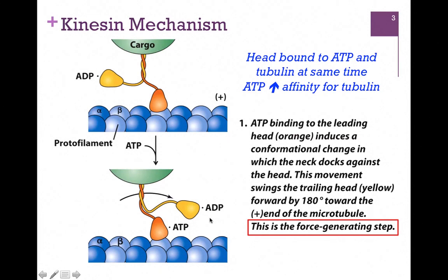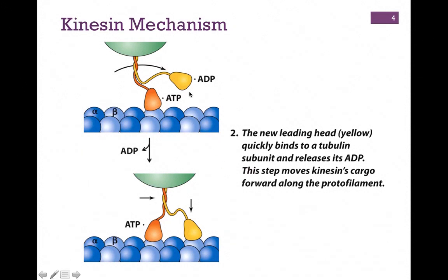Here's another difference: our goal is to move that cargo towards the positive end, and simply by moving my left foot forward, I'm already moving in that direction. So the force-generating step is the first thing instead of the last thing, as we saw in myosin. We now have a new leading head in yellow, currently bound to ADP, and our new trailing head in orange is bound to ATP. As we swing that new leading head forward, it quickly binds the next beta subunit of tubulin and releases its ADP.